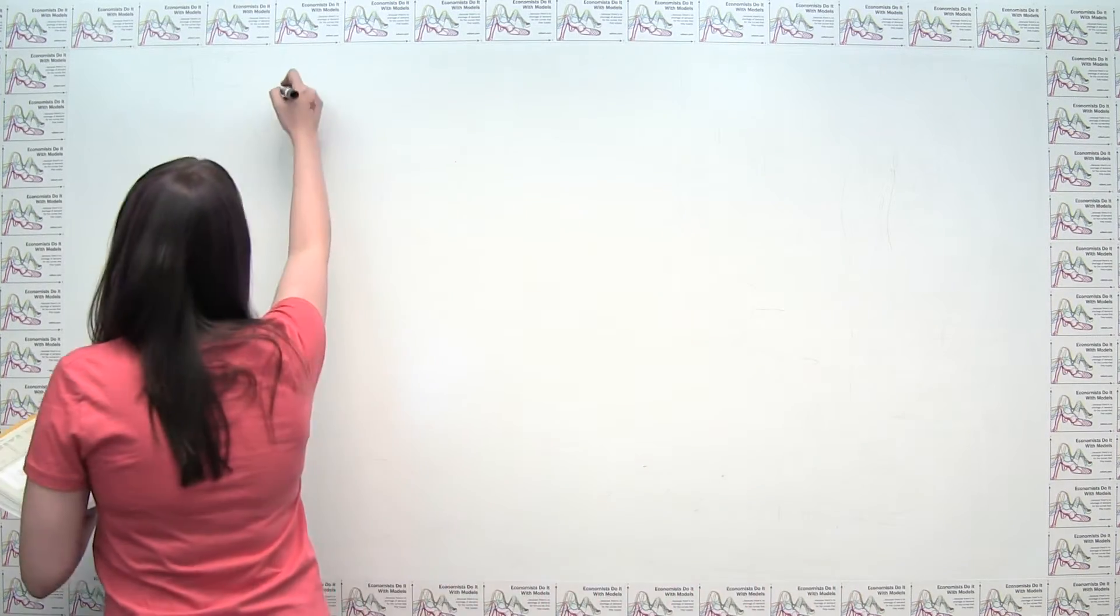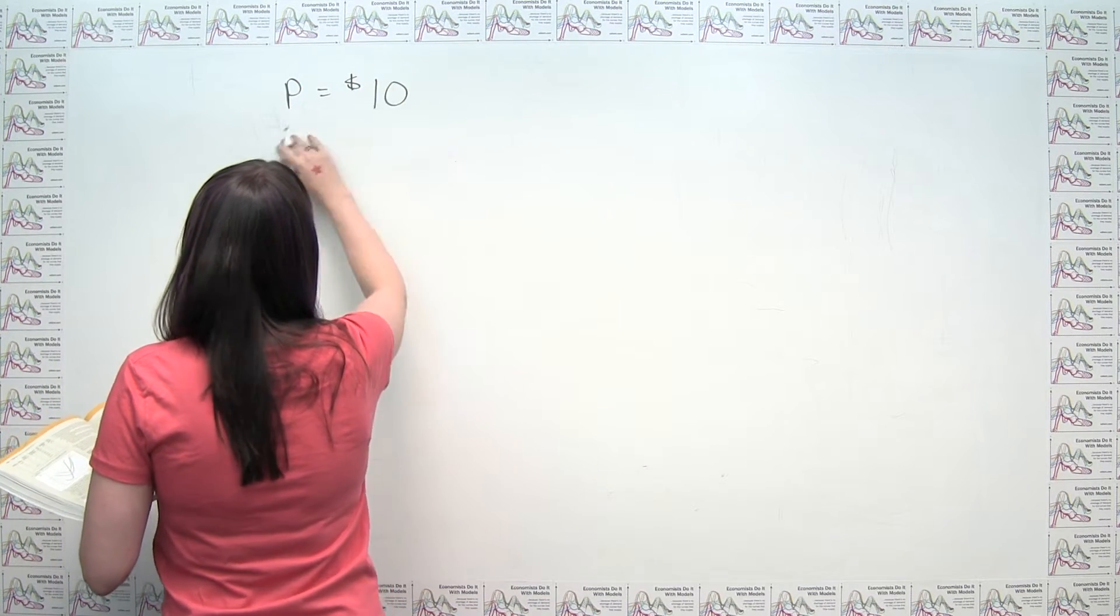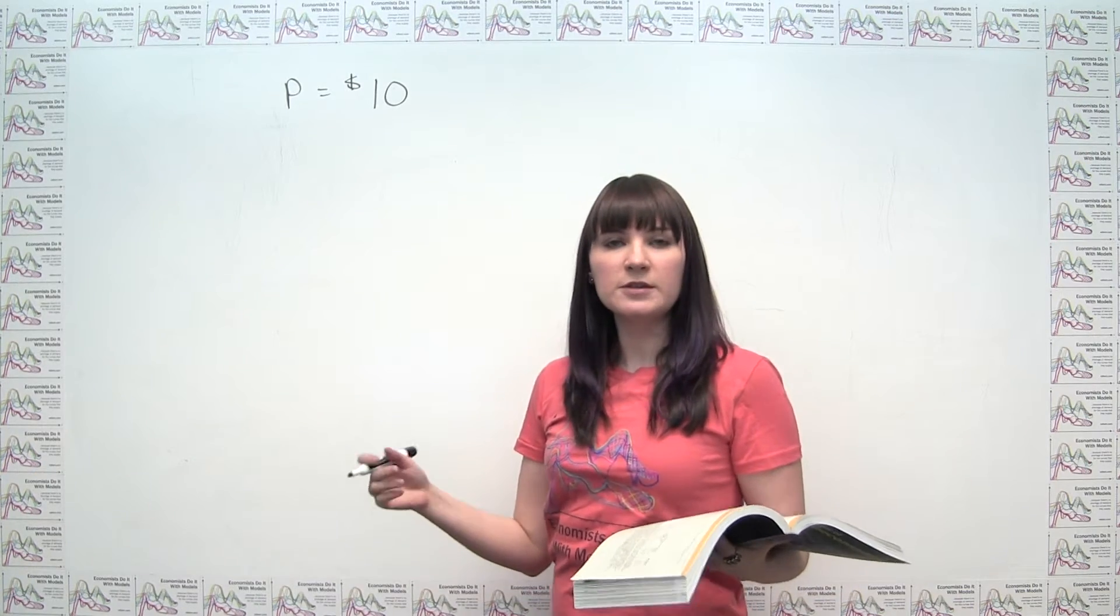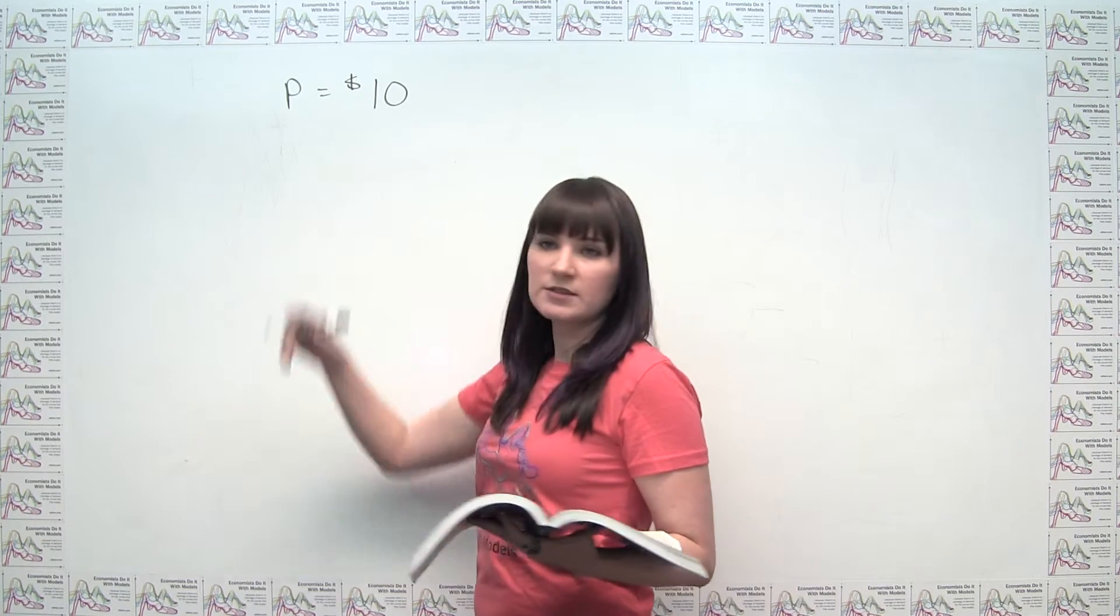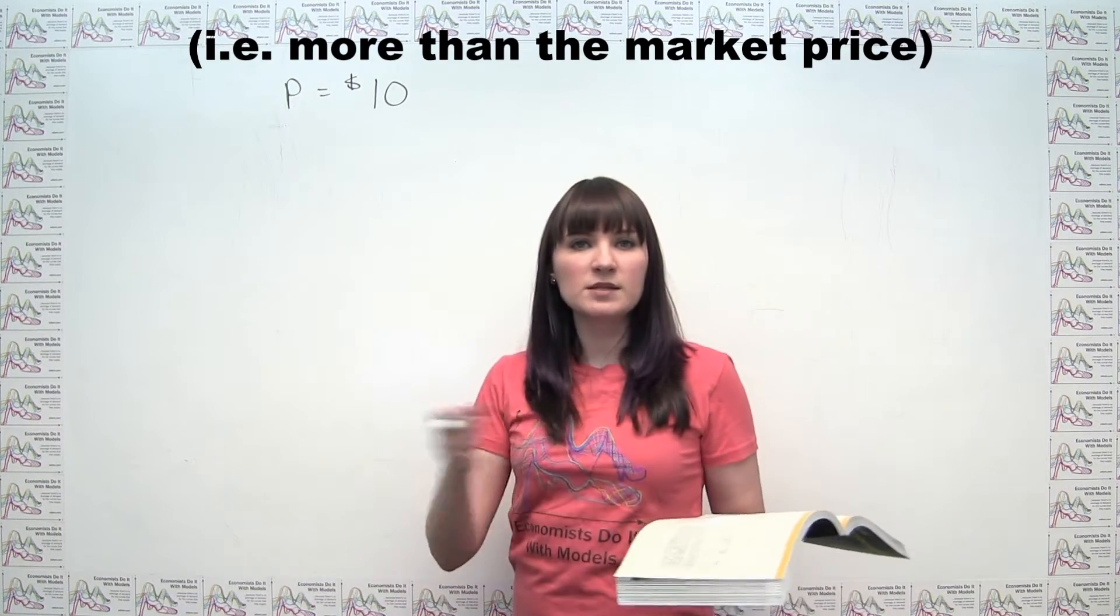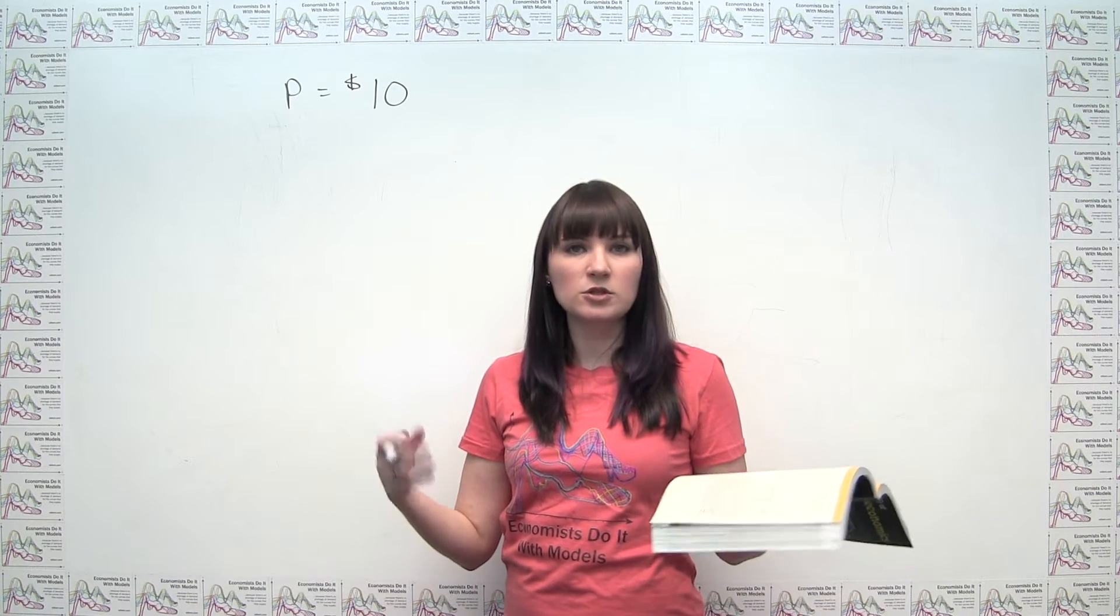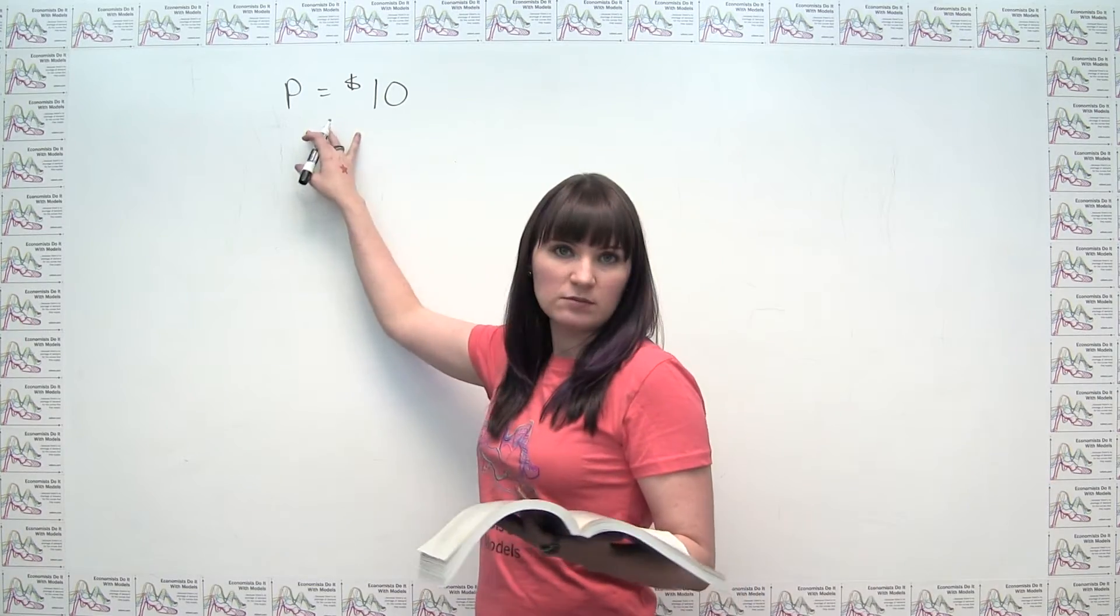It says Barney clears driveways for $10 each. So if he's profit-maximizing, it must be the case that the market price for clearing driveways is $10. Because in a competitive market, if he's just taking the market prices given, he wouldn't be able to clear any driveways if he charged more than $10. But since he can clear as many as he wants at a price of $10, he has no incentive to charge less than $10, or charge less than the market price, right? So the market price must be $10.